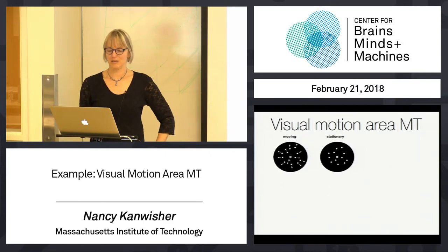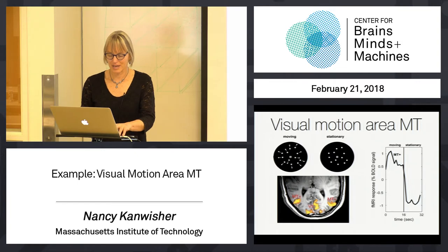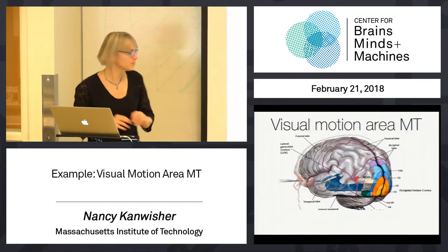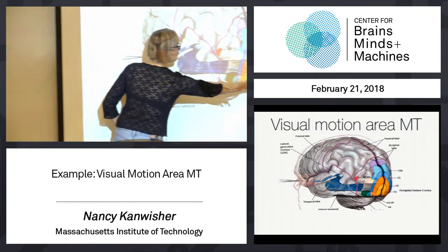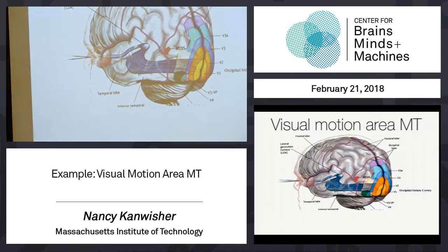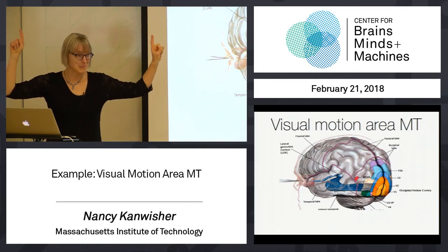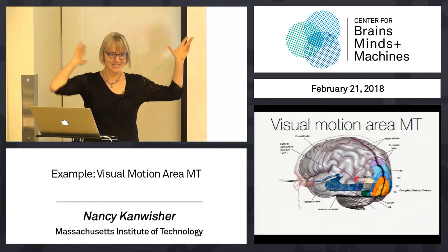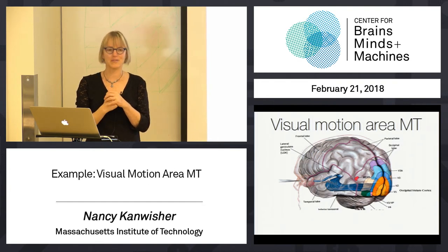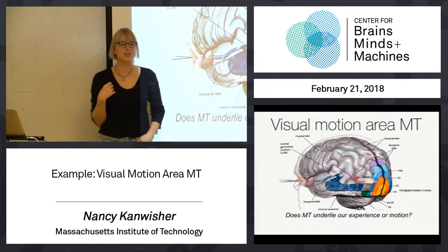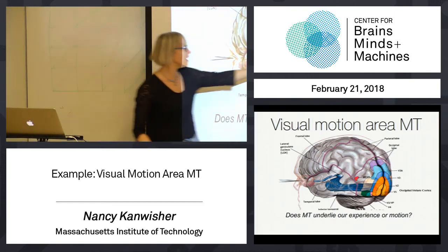MT has also been found in humans. Here is, in a human brain, back of the head, V1 sticking out. Most of V1 is in the sulcus. Here's MT right out there — it's right out on the surface. You could zap it with TMS, and people have done that. What happens when you zap MT with TMS? You interfere with motion perception. You don't interfere with perception of shape or other things, but you are less able to tell direction of motion. You can also map it with functional MRI — show moving dots versus stationary dots, and you find MT.